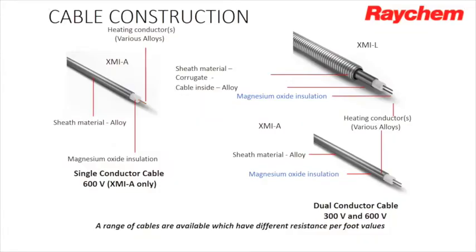Before we talk about the advantages of MI cable, we need to break down the cable. This is an example of MI cable. As you can see, you have two different types: a single conductor and a dual conductor. The single conductor is rated up to 600 volts with a maximum output of 61 watts per foot. For the dual conductor, the 300-volt version has a maximum output of 32 watts per foot, and the 600-volt version has 62 watts per foot.